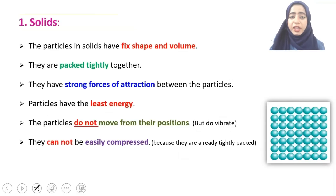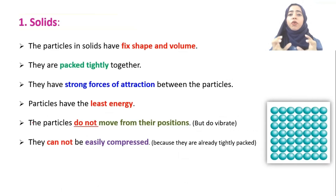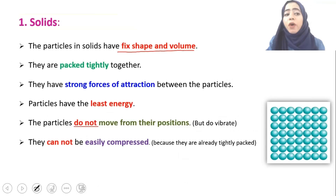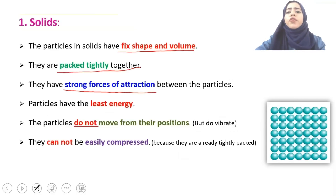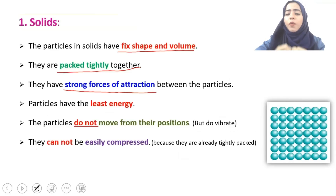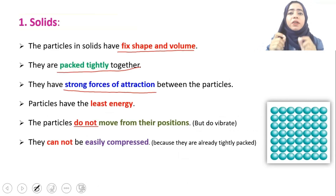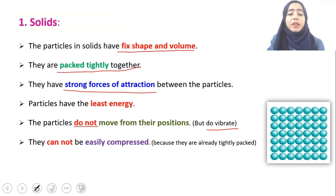Moving towards the properties of the states one by one. The very first state is solid. Solid has a fixed shape and volume. The particles are tightly packed together and they have very strong forces of attraction between them.